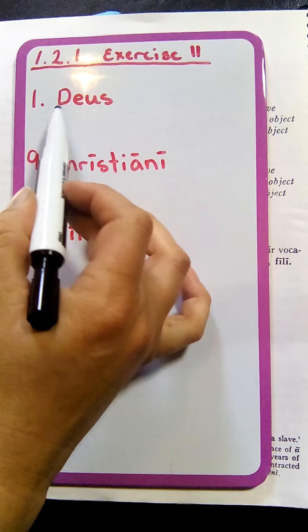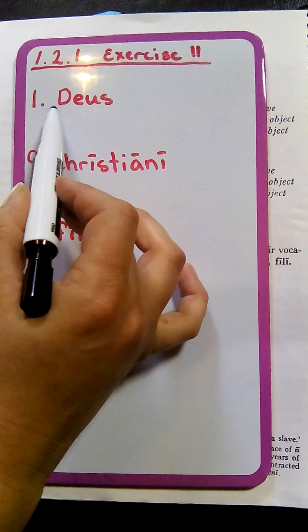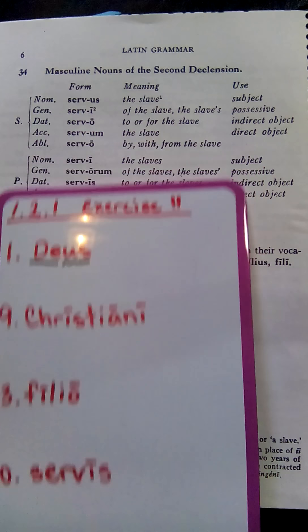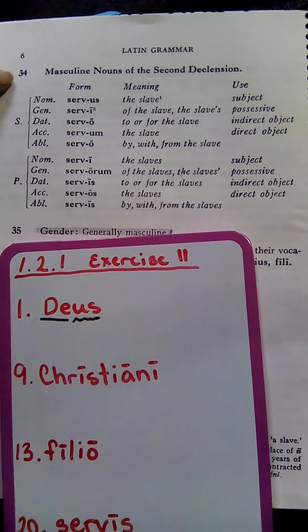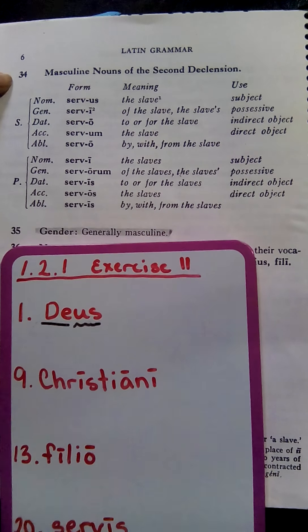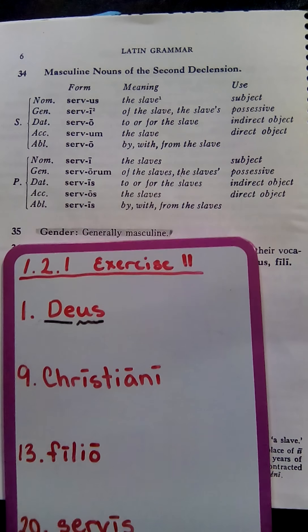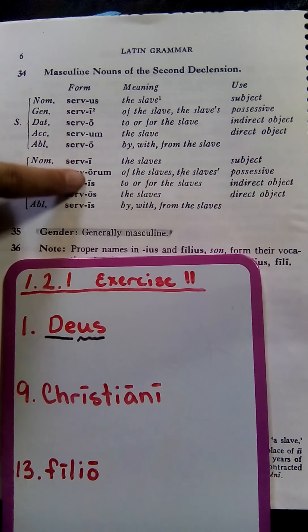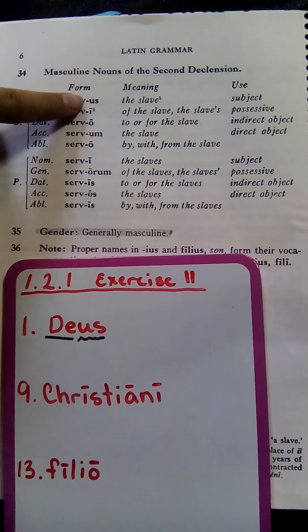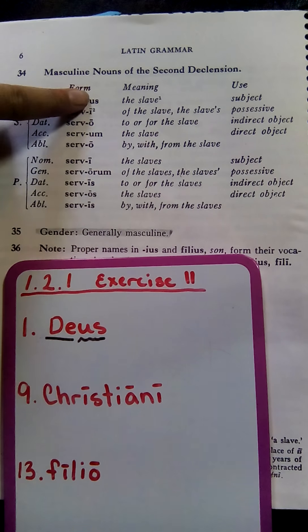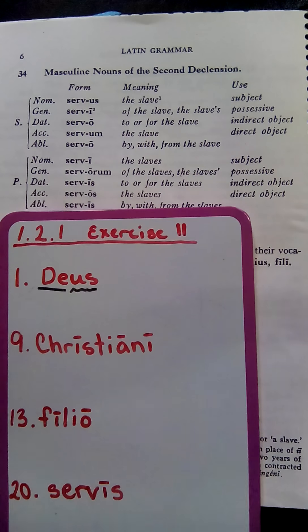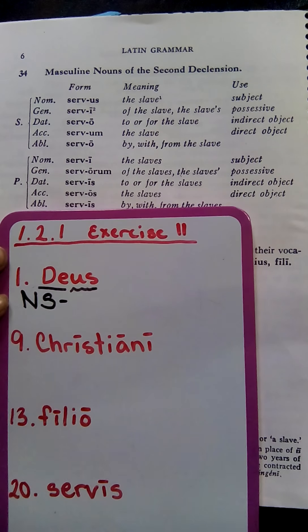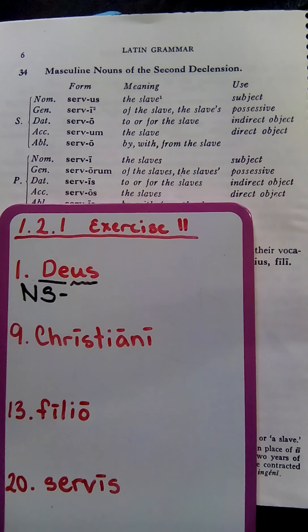We're going to look at number 1, and number 1 gives us the word "deus." We know that the stem is "de," so "us" is our ending. We're going to look in our grammar book at Grammar Rule Number 34, looking at the masculine noun of the second declension. We see our forms — our endings — and we're going to look for the "us" ending.